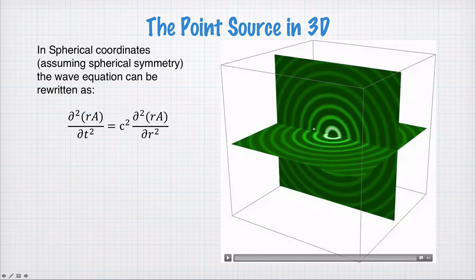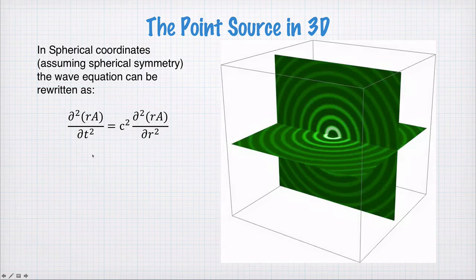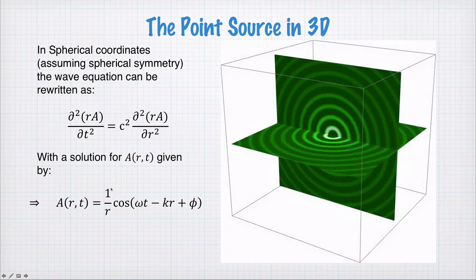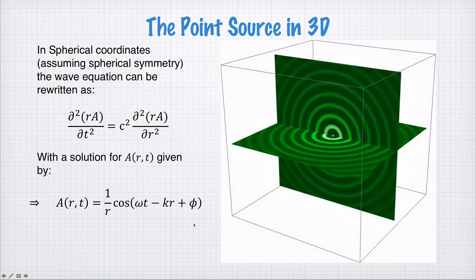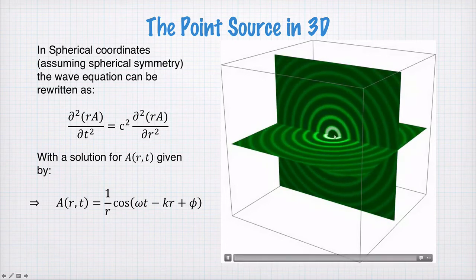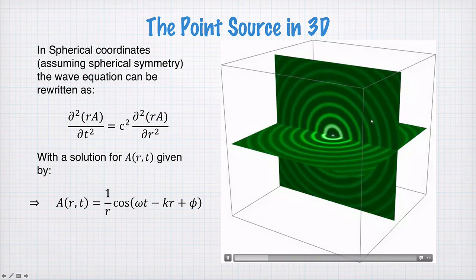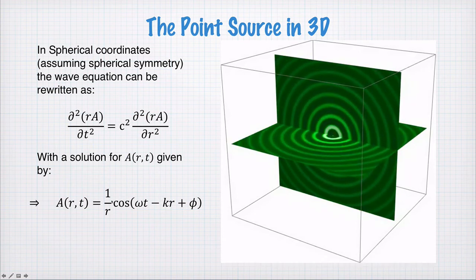It would look like this: we have shells, spheres propagating out from the center. In this case we can reduce the wave equation back down to a system with one spatial dimension, which is the radius — the distance from the center — and time. We have a second order time derivative, second order spatial derivative, and the function we're solving for is a, which is a function of r and t. One possible solution is 1/r — a wave with amplitude that decays as the inverse radius — times a cosine function with (ωt - kr) and some phase. If we animate these waves, we have waves being emitted from this point source, moving away at the speed of the wave, with amplitude decaying as 1/r.